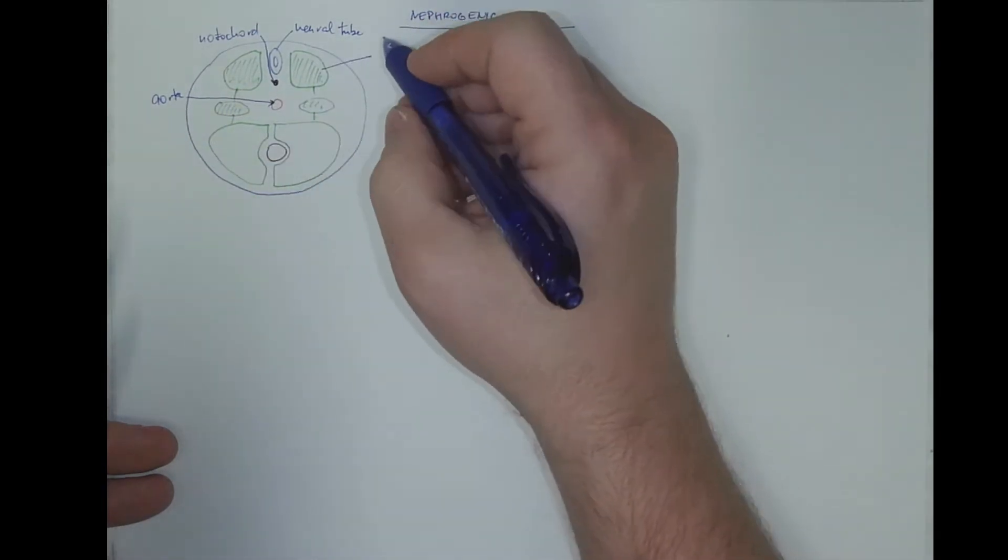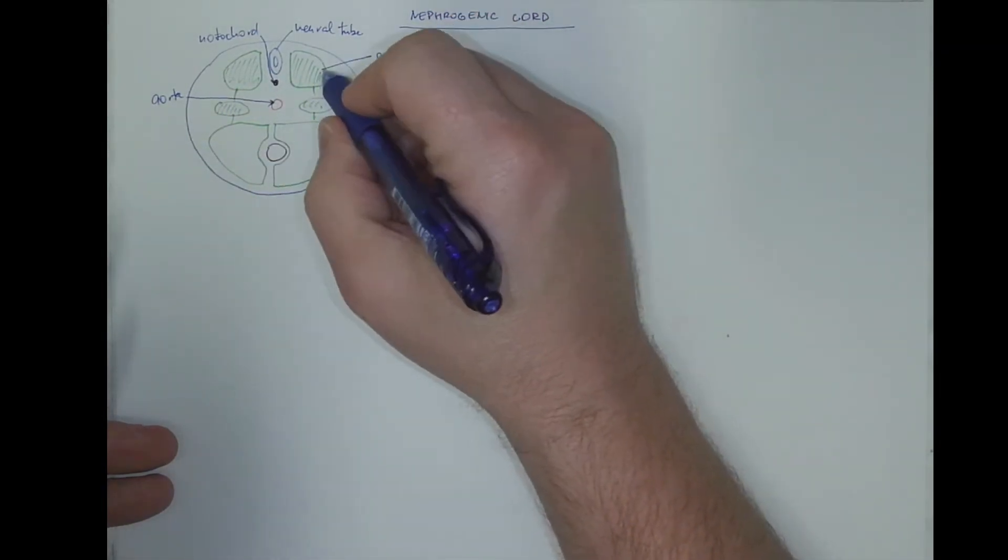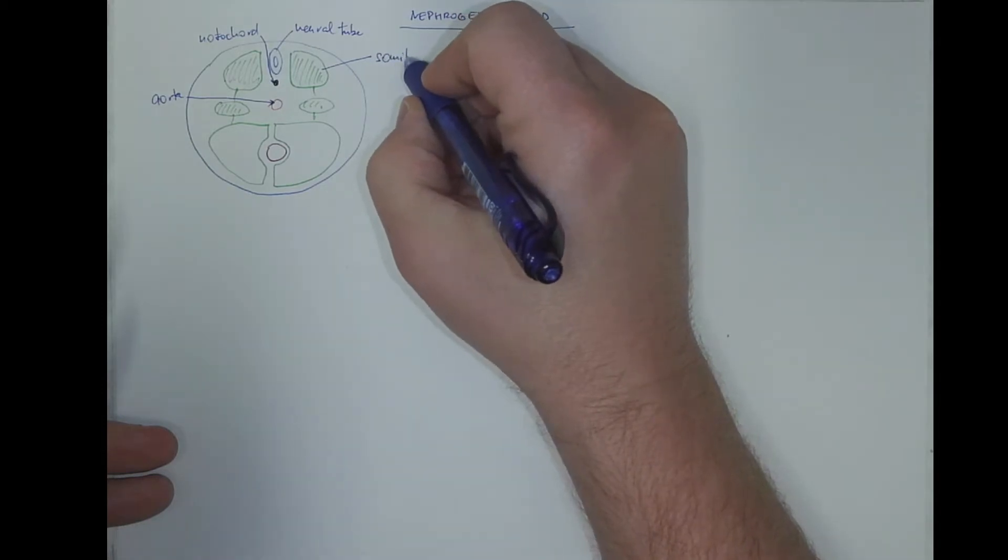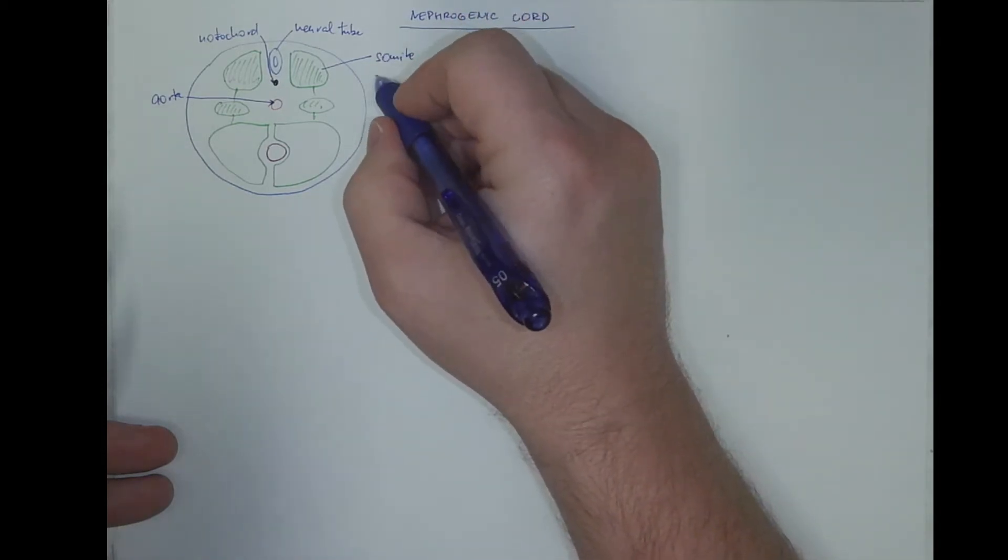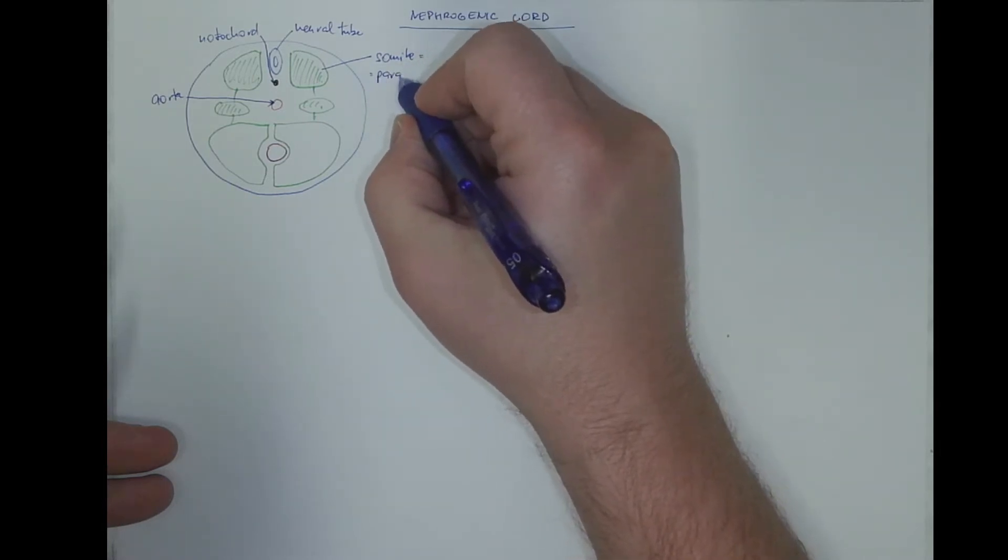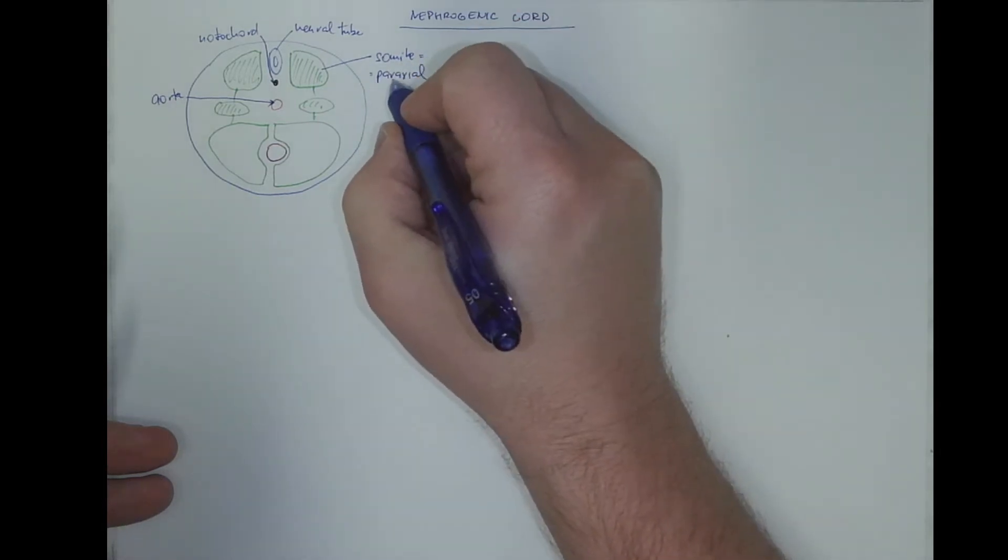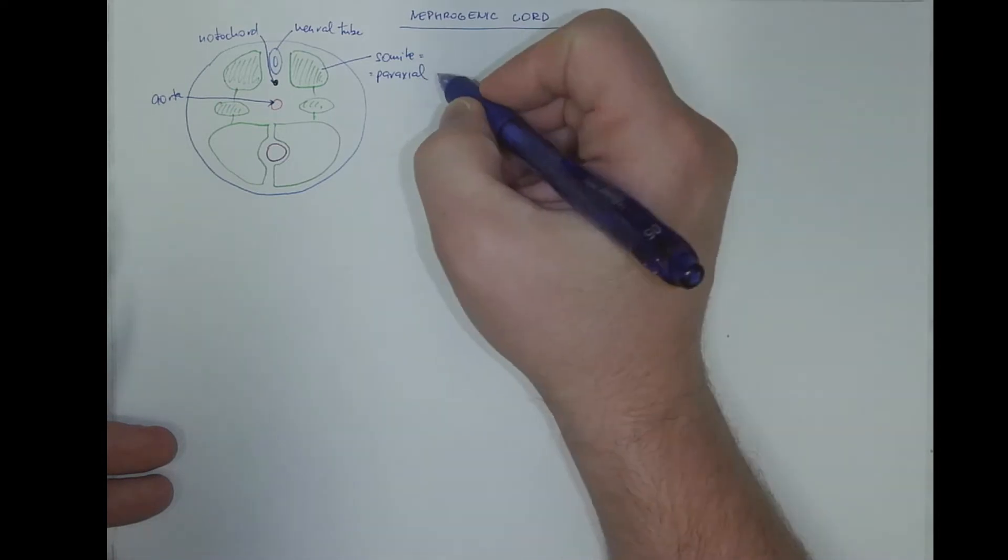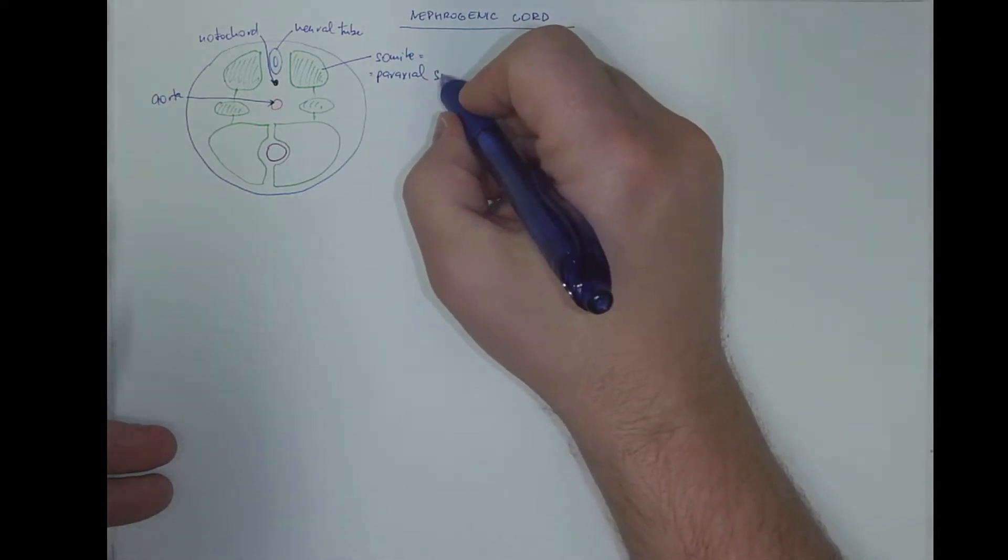This is the somite, one of many somites, which is also called the paraxial, because it's close to the body axis, parallel to the body axis, this paraxial segmented mesoderm.